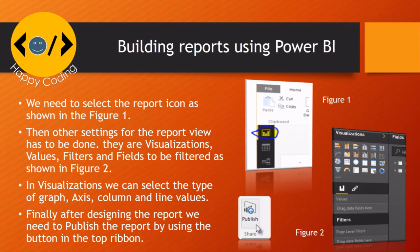Building reports using Power BI. We need to select the report icon as shown in Figure 1. Then other settings for the report view have to be done. They are visualizations, values, filters, and fields to be filtered as shown in Figure 2. In visualizations we can select the type of graph, axis, column, and line values. Finally, after designing the report, we need to publish the report by using the button in the top ribbon.